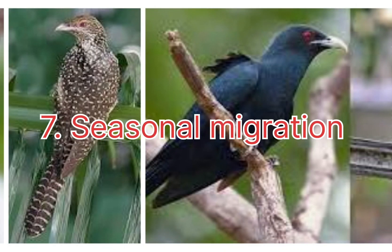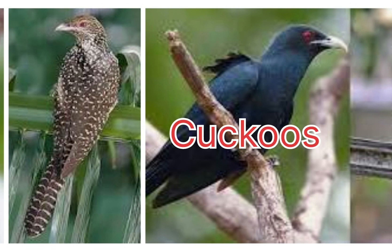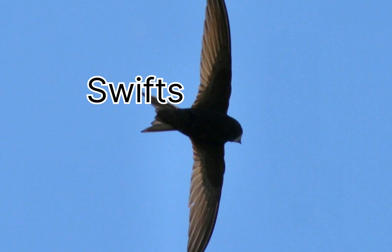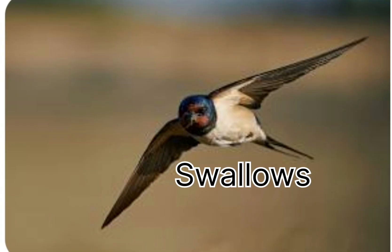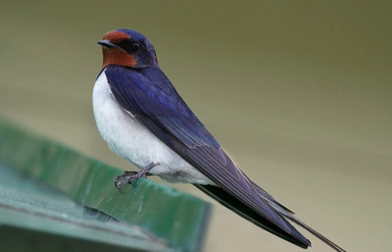The seventh type is seasonal migration. Some birds migrate at different seasons of the year for food and breeding, called seasonal migration. For example, cuckoos, swifts, and swallows migrate from south to the north during the summer, and hence these birds are also called summer visitors.